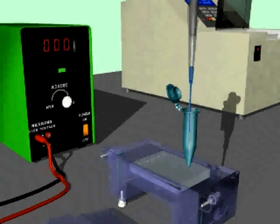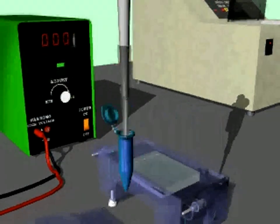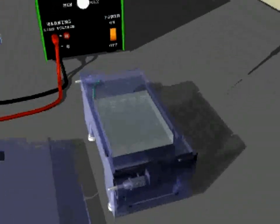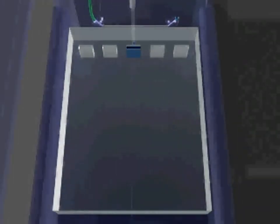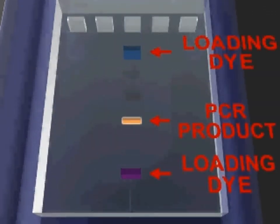A dye is then added to the reaction, and the DNA fragments are separated by electrophoresis on an agarose gel. The target DNA can then be eluted from the agarose gel for further analysis.